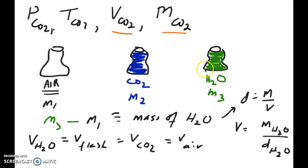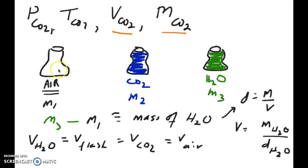If we can get the volume of water in this flask, we can get the volume of air because those two quantities are equal. Now, how do we get the volume of water? We can calculate the mass of water — we talked about this in the previous video. The mass of water when I fill the flask is m3 minus m1. Because water is so much denser than air, the mass of air can be neglected, so mass of water is just m3 minus m1. Once I have the mass of water, I use the density equation — volume of water equals mass of water divided by density of water.